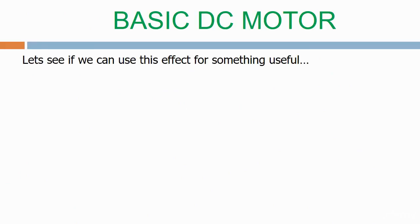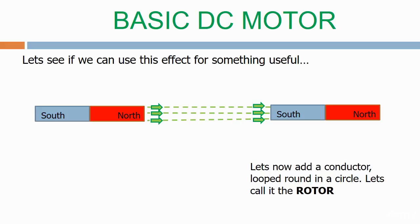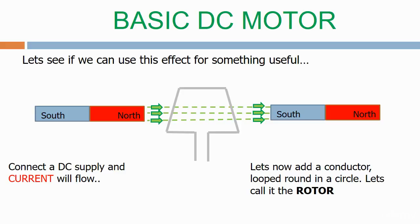Let's now see if we can use this effect for something useful. Here we have our two bar magnets from before. The magnetic field flows from north to south, left to right. Let's now add a conductor looped round in a circle — let's call it the rotor. Connected to a DC supply, current will flow. Here's our DC supply connected to the rotor. The current flows down the left hand side, across the top, and back down the right hand side.